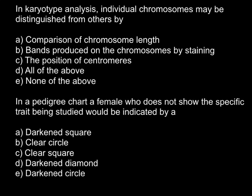The correct answer here would be D — all of the above. All these traits would be compared when you want to distinguish one chromosome from another. The human karyotype consists of 23 pairs of chromosomes, distinguished by length from longest to shortest, ending with the Y chromosome. Band patterns produced are also unique for each pair of chromosomes, and of course the position of the centromere, which can be in the middle or closer to one of the ends.